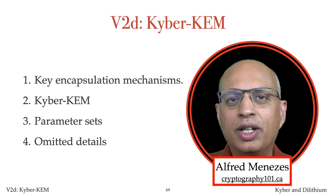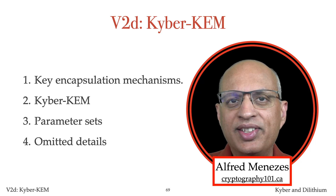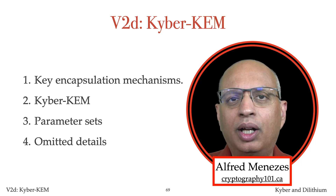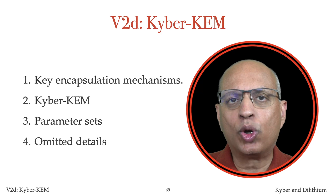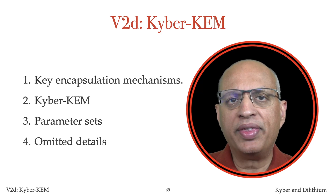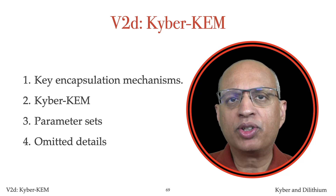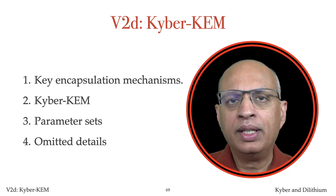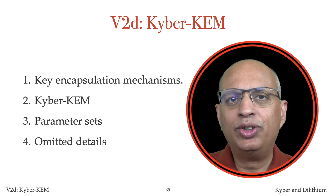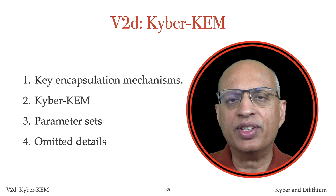Welcome to Video V2D. In this lecture, I'll describe the Fujisaki-Okamoto transform, which is a generic method for converting a public key encryption scheme that is secure against chosen plaintext attacks into one that is also secure against chosen ciphertext attacks.